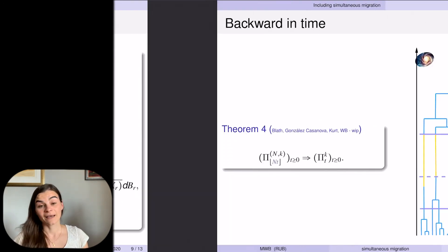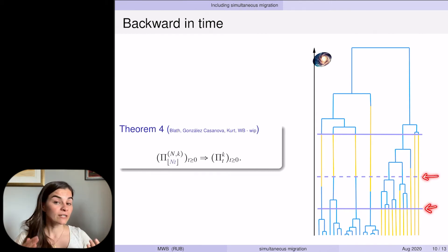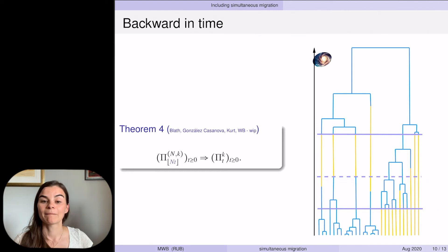Backwards in time we get a very similar picture. We also have a scaling limit with the same scaling of n, and we get this object that again has the same kind of transitions we saw before—the pairwise mergers of active lineages, individual transition into and out of dormancy—but in addition we have these big events where several individuals simultaneously decide to move into or out of the seed bank. This guy and the previous jumping diffusion are moment duals of each other, too.